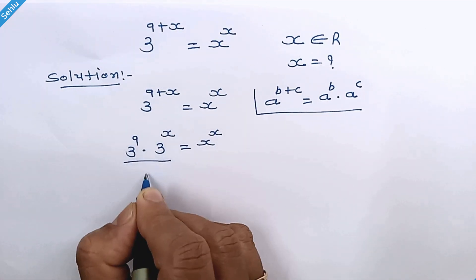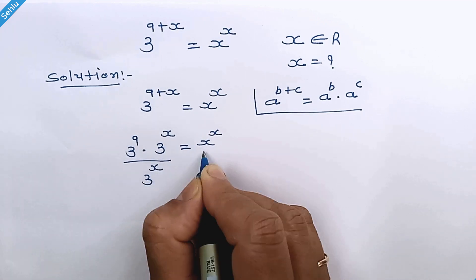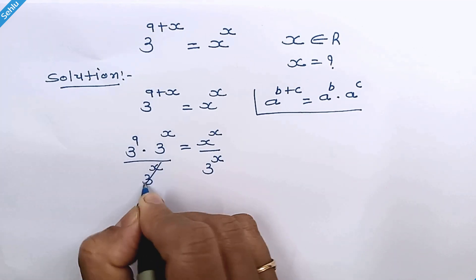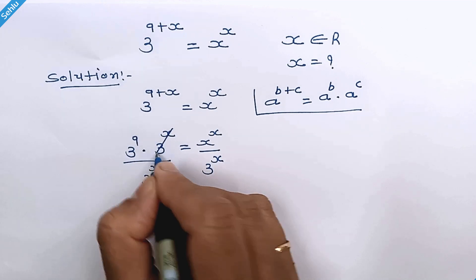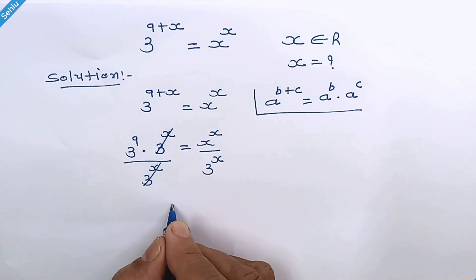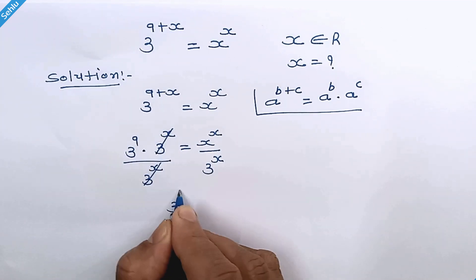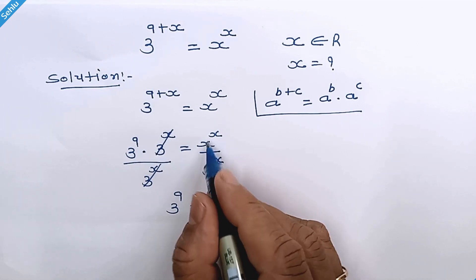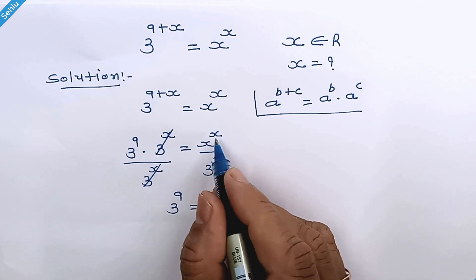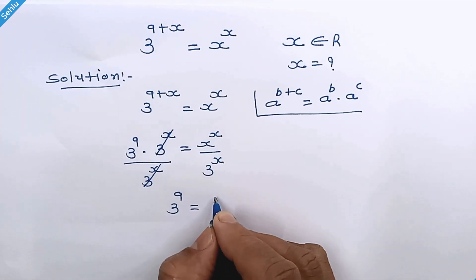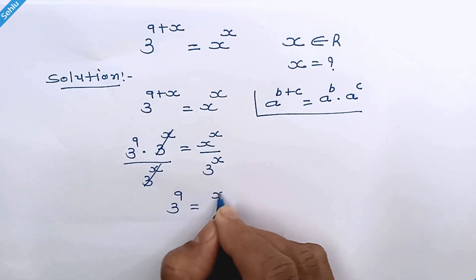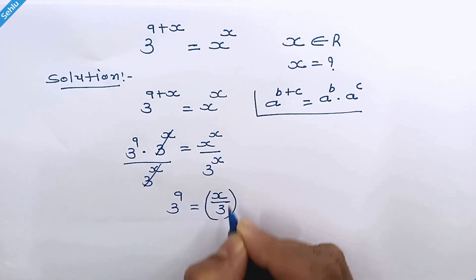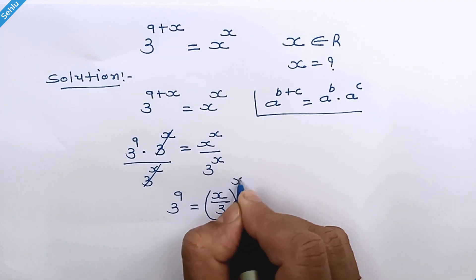We will divide by 3 raised to x on both sides. So these two get cancelled out. Now we have 3 raised to 9 is equal to — since these two have the same exponents, we can combine them — so it will be x over 3, whole raised to x.